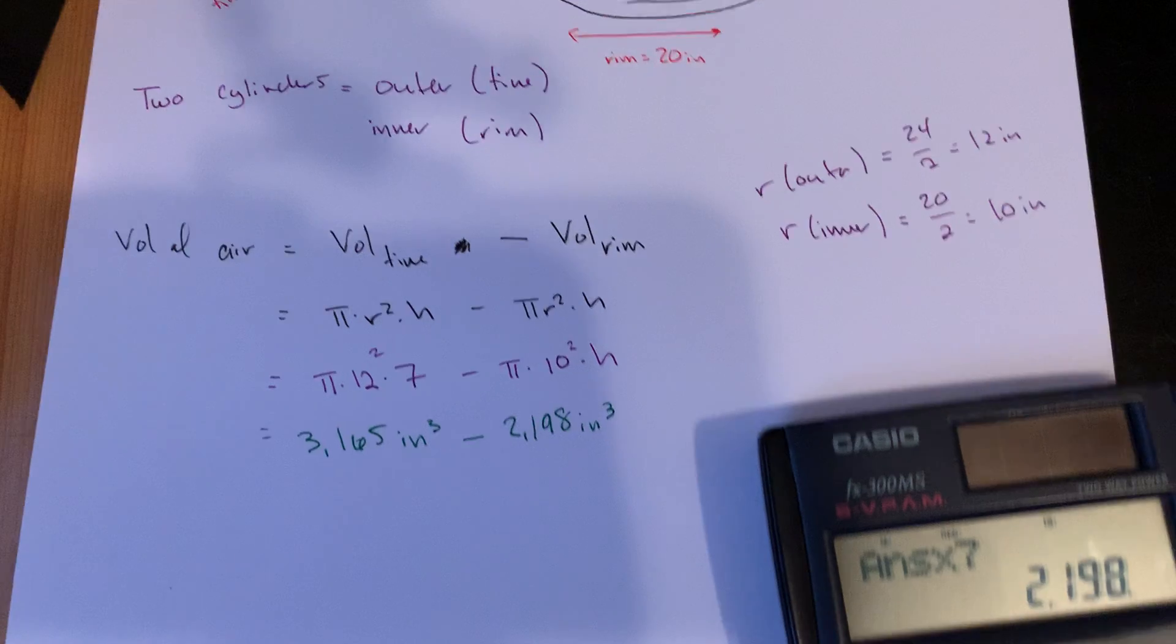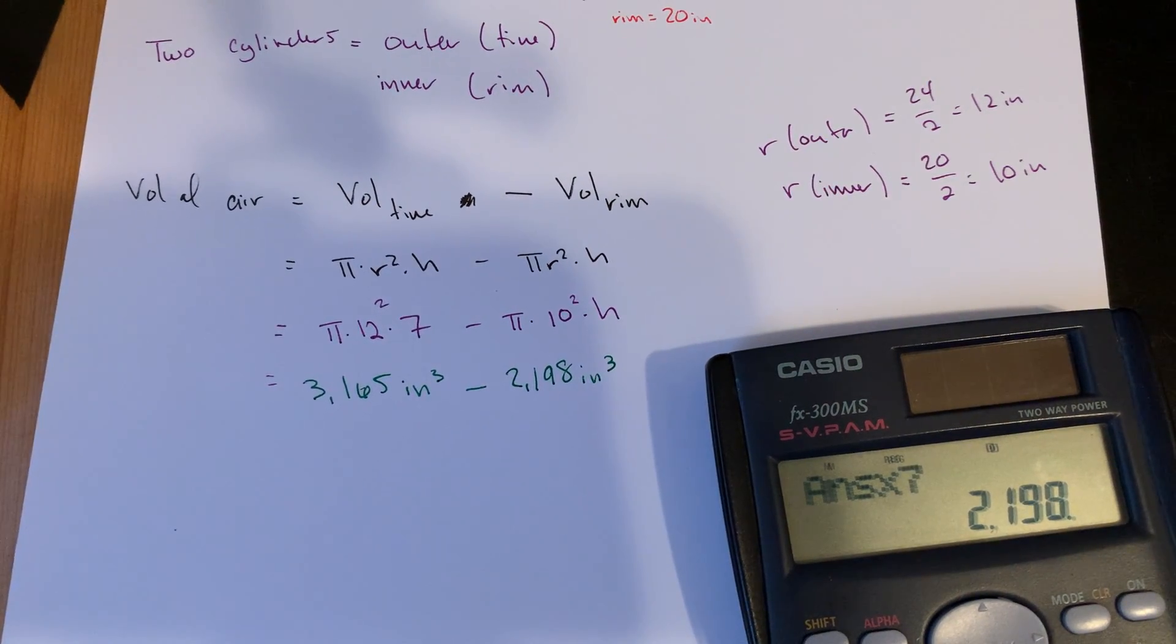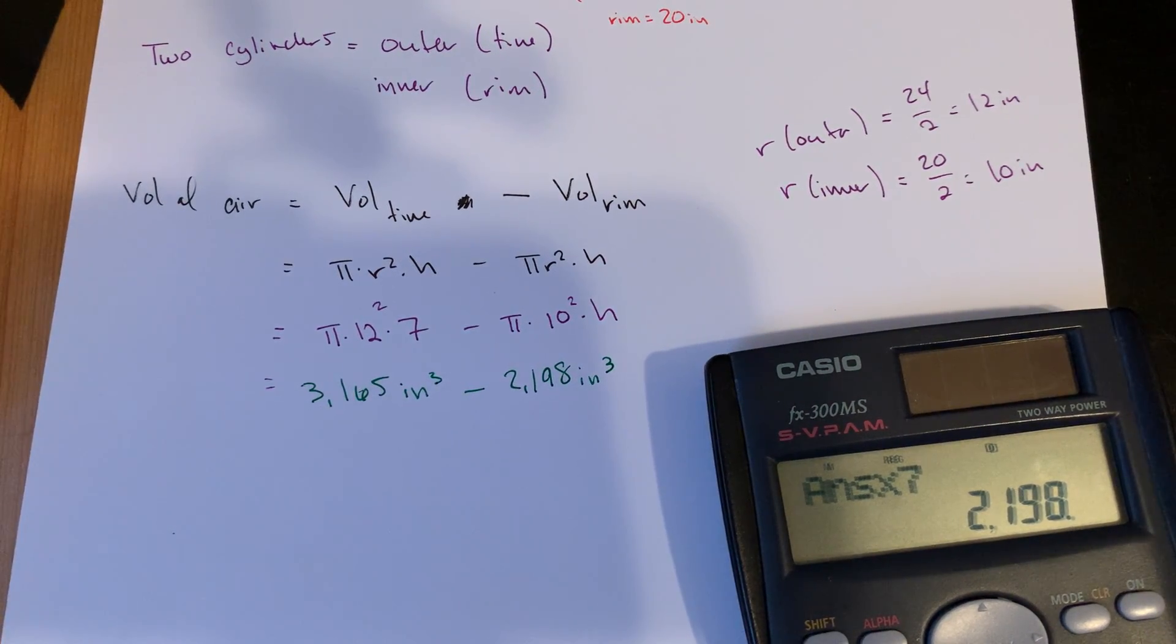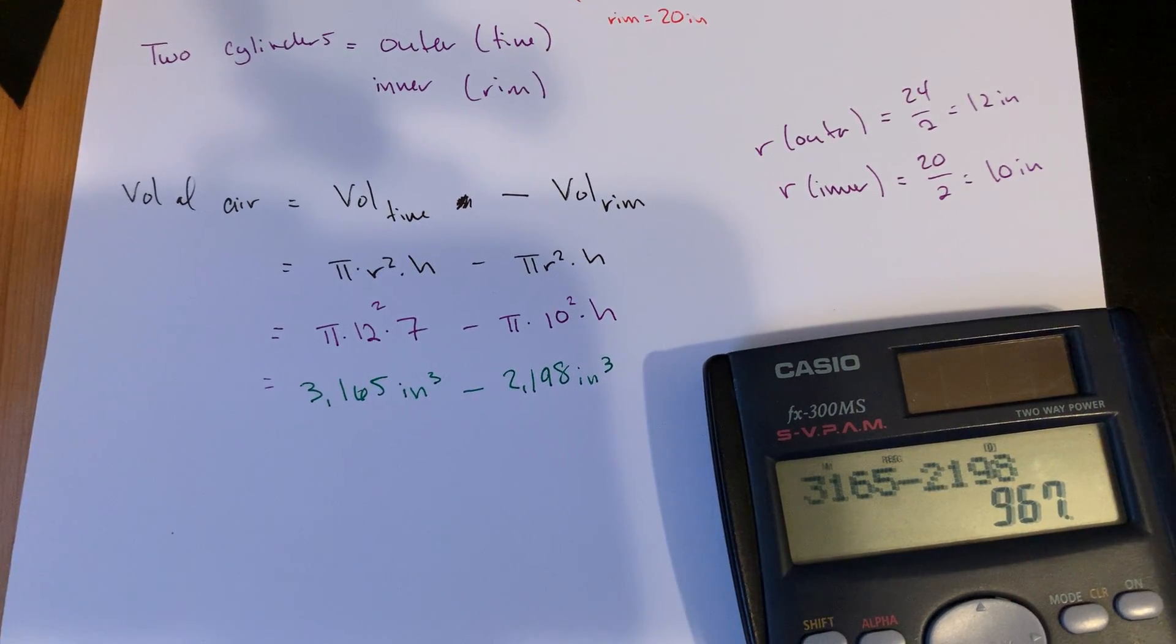Minus, similarly, 3.14 times 10 times 10, so we all know that's times 100, so that's 314 times 7, 2,198. Okay, so to finish this off, to find the volume only of the air, I'm just going to take 3,165 and subtract away my 2,198, and that's going to get me 964.